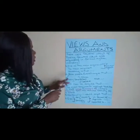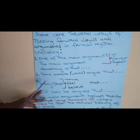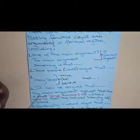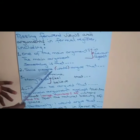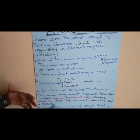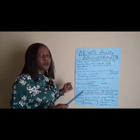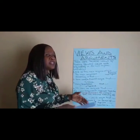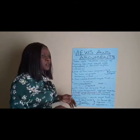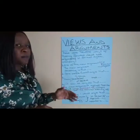Another way of expressing your argument is: 'some people would argue that.' When you say 'some people,' you are using generalization — we don't know how many people they are, but some people would argue that. At this point you are expressing a view or argument without necessarily putting yourself in the shoes of the person who actually said it; you are quoting what someone else has said in order to support your argument.